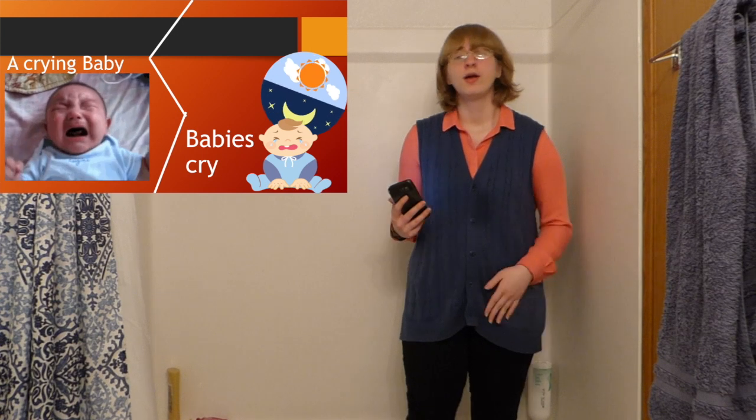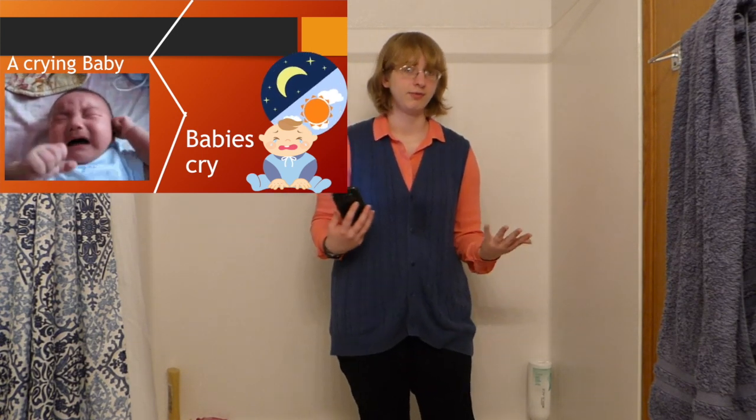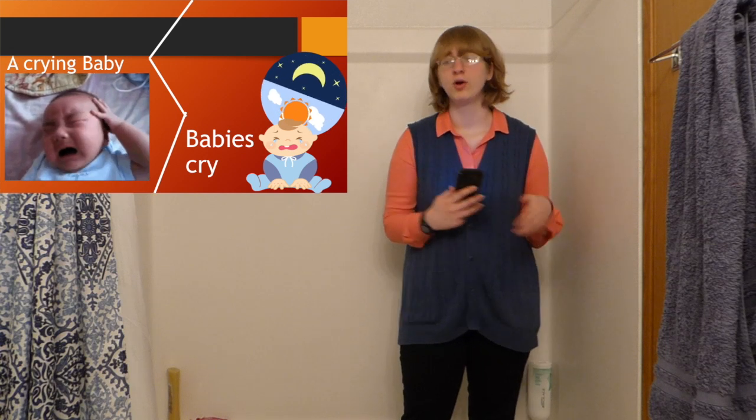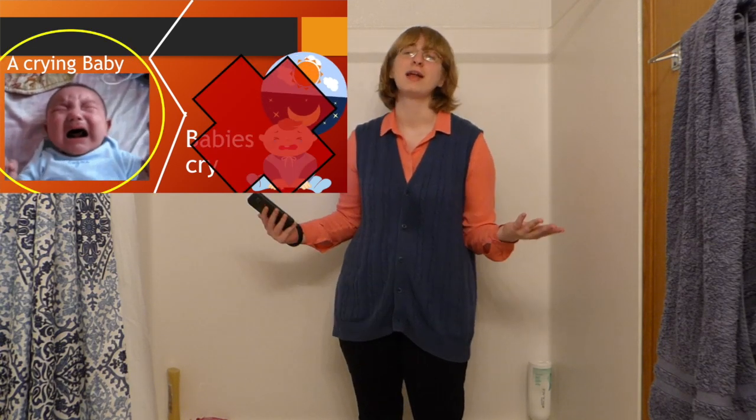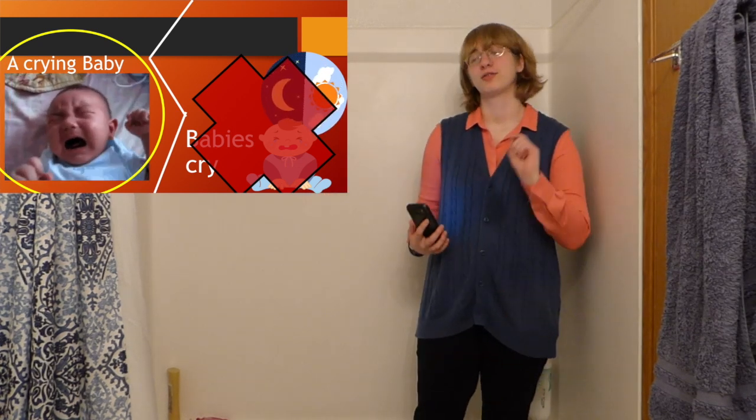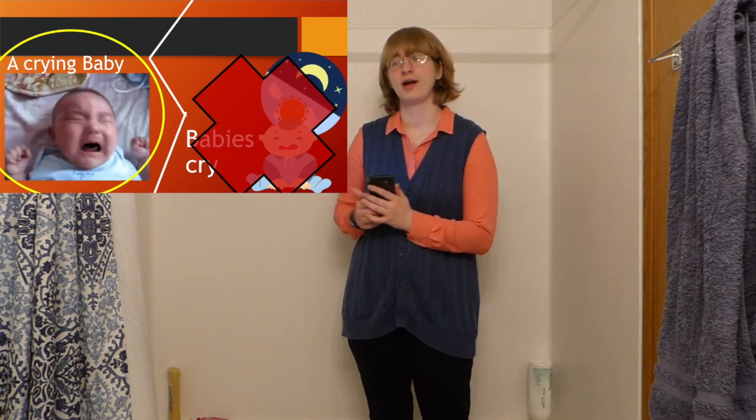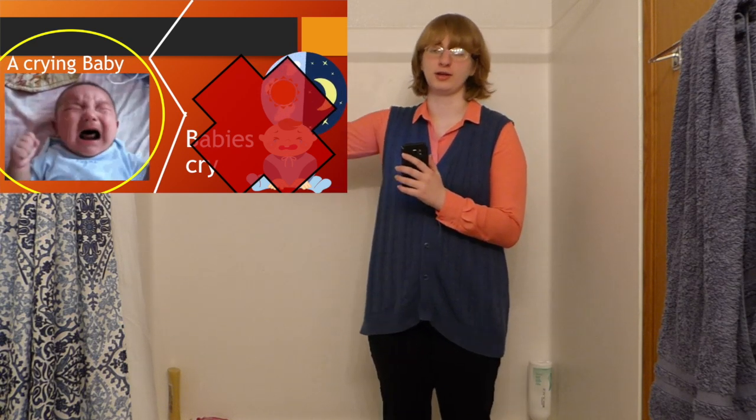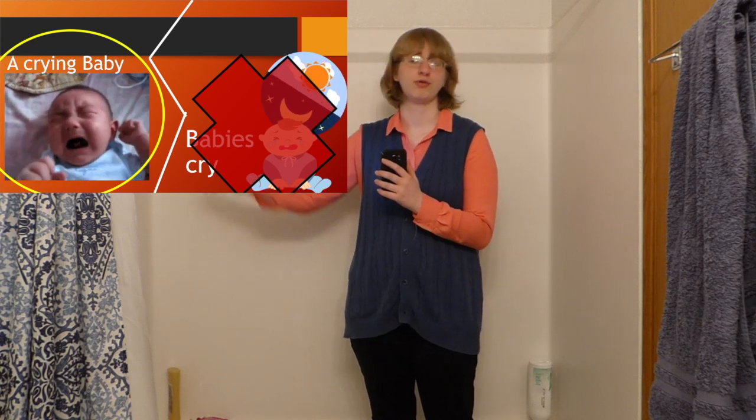For example, which one of these do you think is an example of Present Progressive? A crying baby? Or babies cry? Yeah, it's the crying baby. Because the baby is crying right at this moment in that picture. While babies cry, I'm situating with the circling gif that it's something that happens throughout the day.